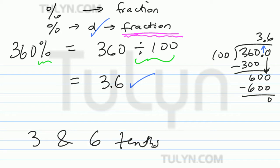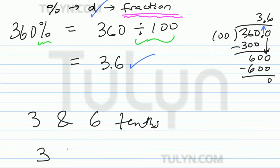Go ahead and rewrite that. It'll be 3 and 6 over 10. If we need this in simplest form, just go ahead and rewrite 6 tenths by dividing by your greatest common factor in 6 and 10. That's 2.